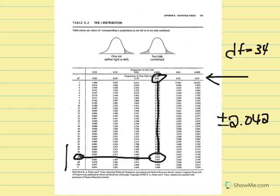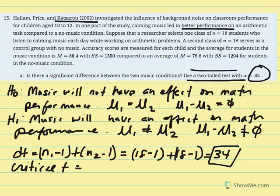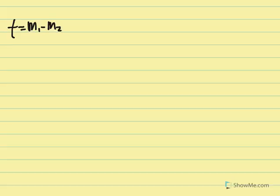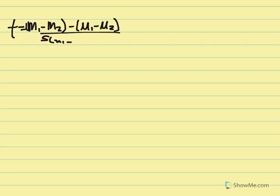We've established the critical region for our test at plus or minus 2.042. Now we need to perform calculations to produce a t-statistic. The t-statistic equals the sample mean difference minus the population mean difference from the null (always zero), over the estimated standard error of the mean difference. We know sample mean 1 was 86.4 and sample mean 2 was 78.8.